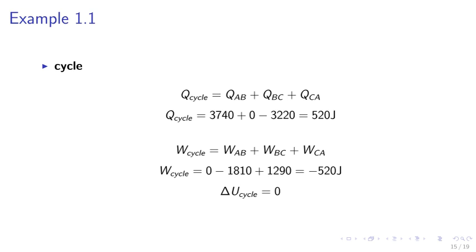For the whole cycle, we can find the heat transfer during the cycle by adding up the contributions from each stage of the cycle. So we obtain Q cycle equals 520 joules. Work done by the system during the cycle is negative 520 joules. And the change in internal energy delta U is equal to zero.